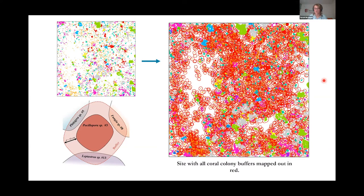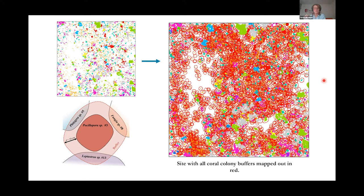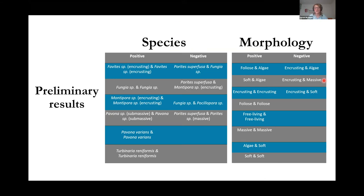After all buffers were created, we calculated the percent coverage that all other coral colonies took up within each buffer, using the tabular intersection analysis tool in ArcMap. From this data, we wanted to see if there were instances of positive co-occurrence or negative co-occurrence between different coral species and different coral morphological types — essentially, whether pairs were statistically more likely or less likely to be found together. Using the percentage data from ArcMap and a bootstrapping technique in R, we were able to assess co-occurrence significance across all 16 sites over the whole atoll.